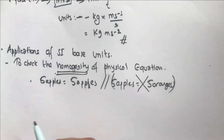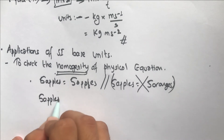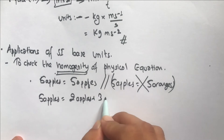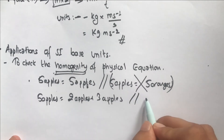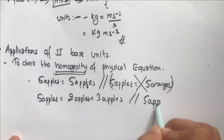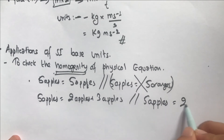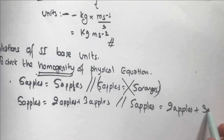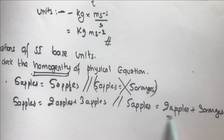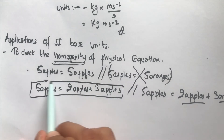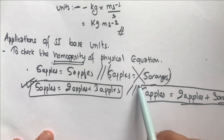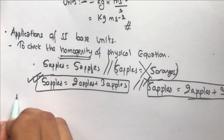I can write 'five apples equals two apples plus three apples,' but I cannot write 'five apples equals two apples plus three oranges' — it makes no sense because you cannot add apples and oranges. The first equation is homogeneous, but the second is not homogeneous. Let's see an example in physics.